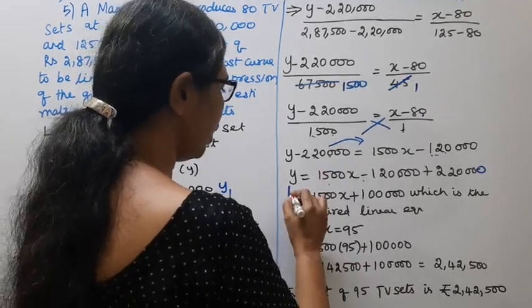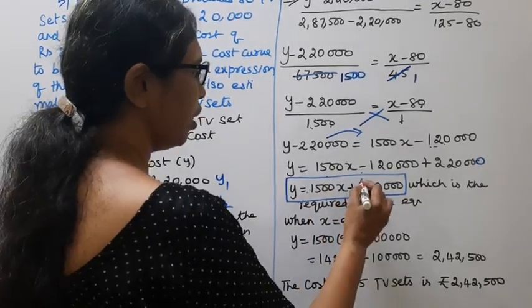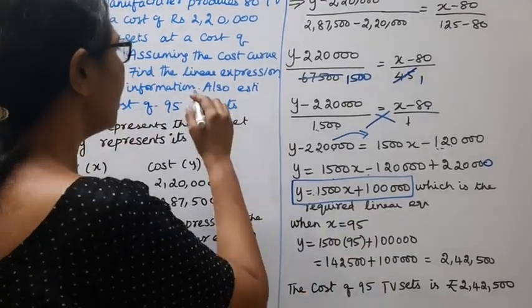This is the linear equation: y equal to 1,500x plus 1,00,000, which is the required linear equation.